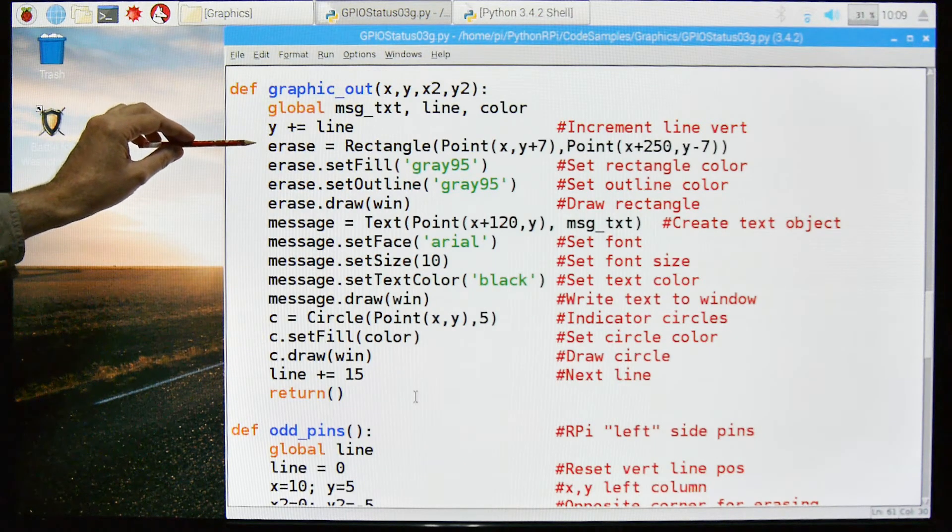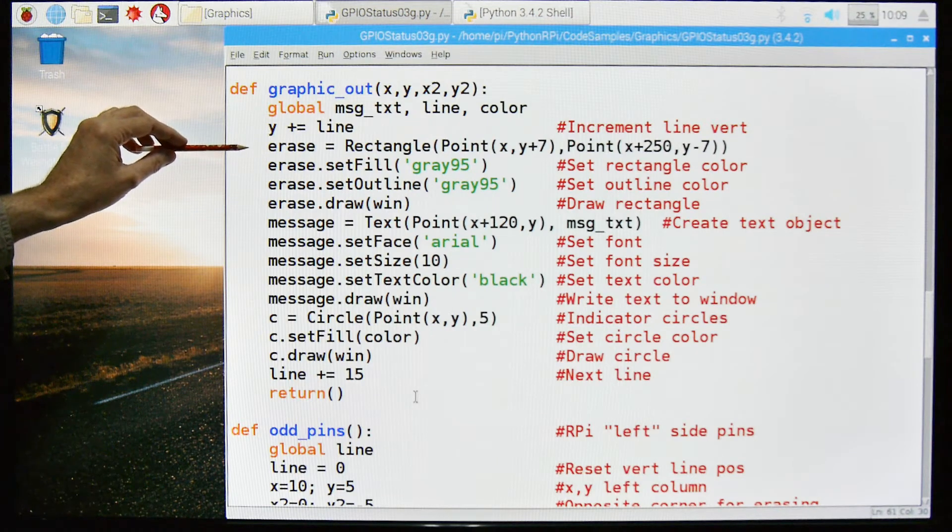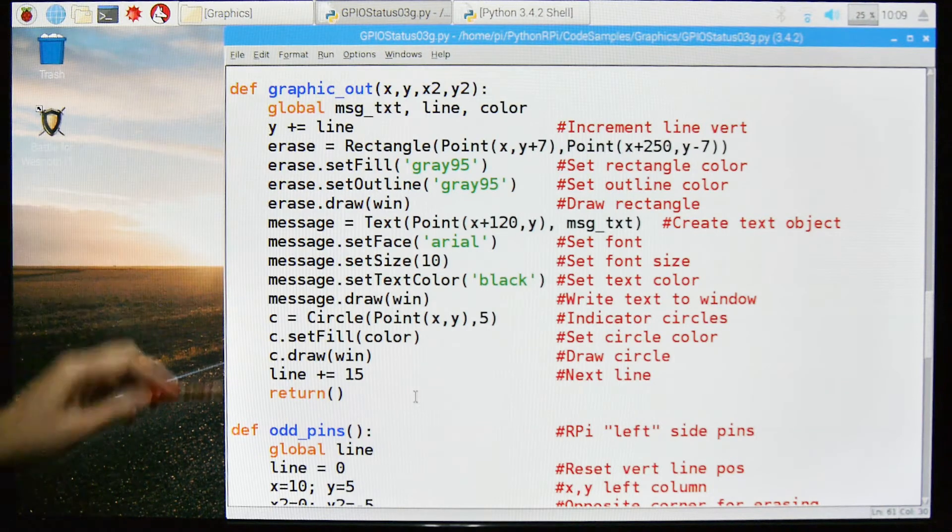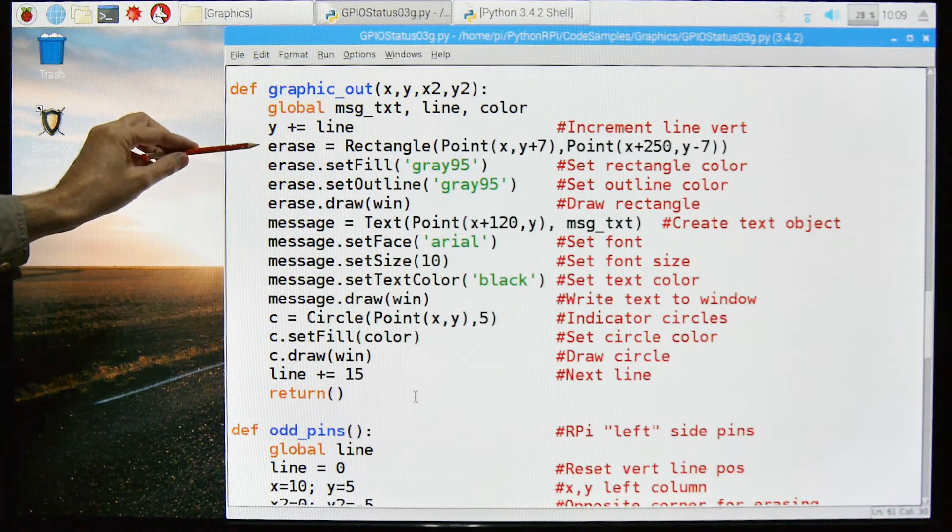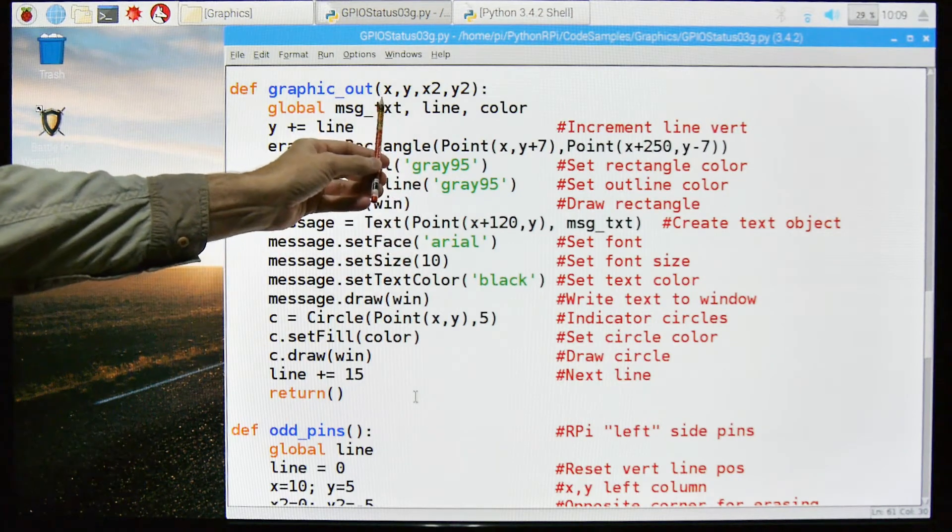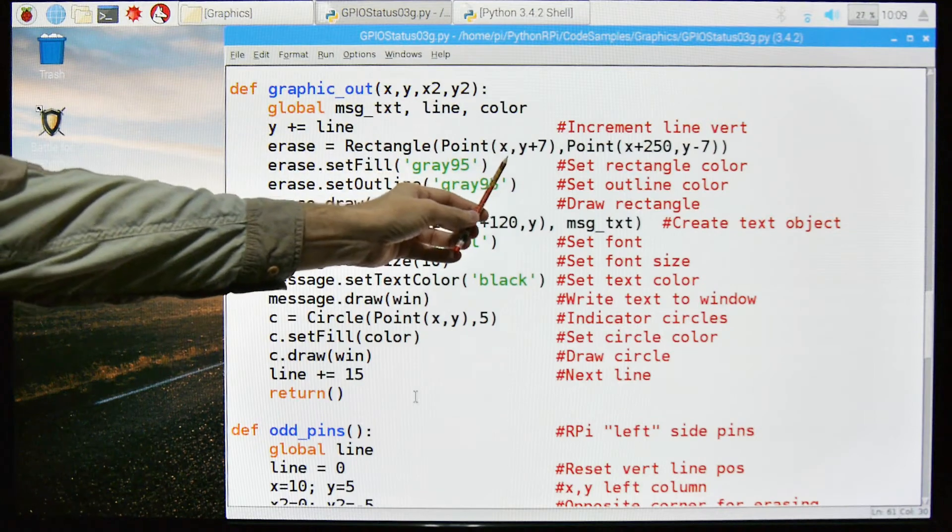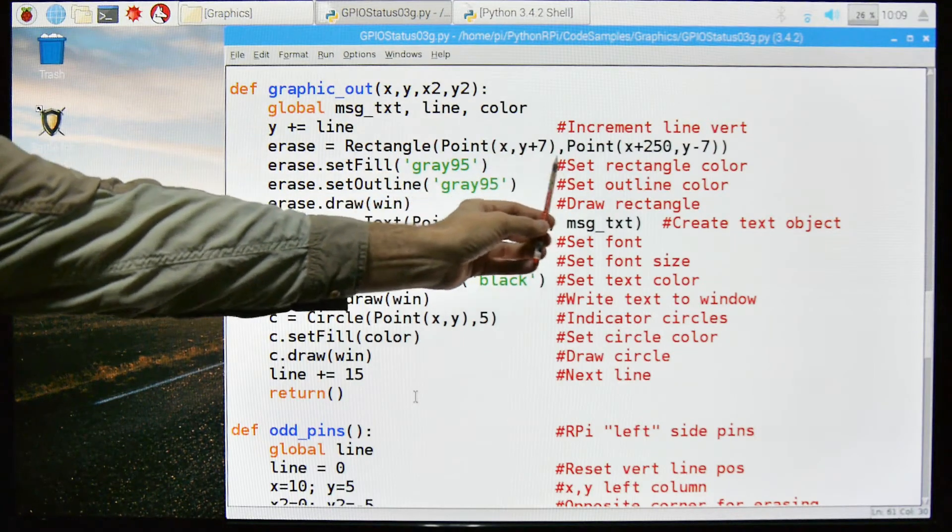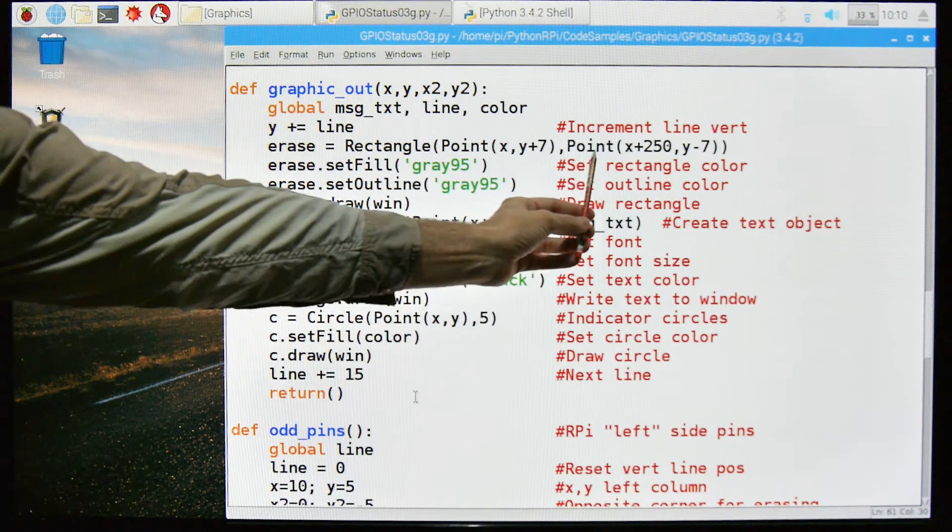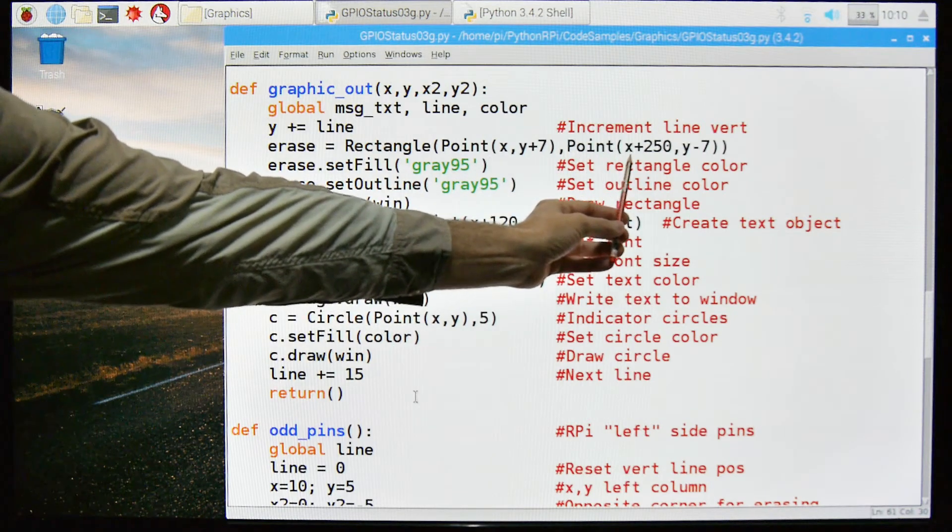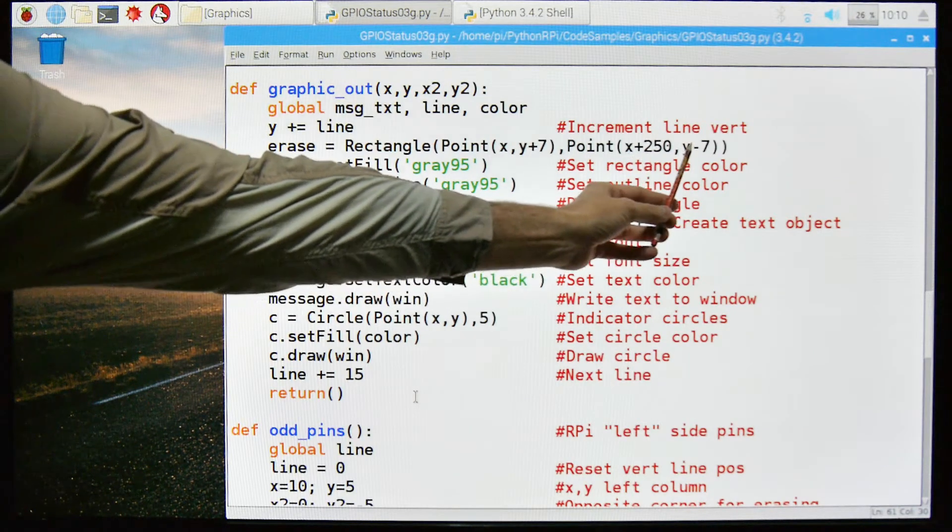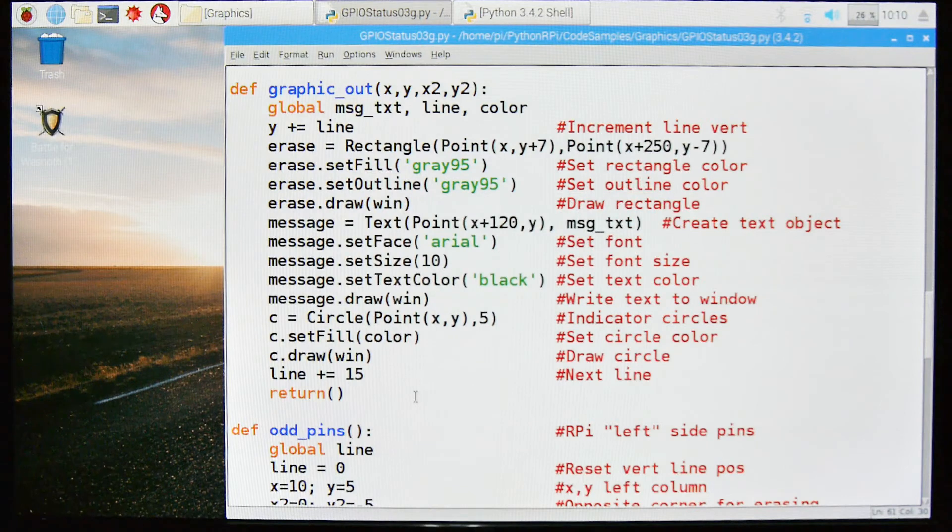So the first thing we're going to do is we're going to erase a position in our window to write to. So it sounds kind of backwards, but we're going to make sure that the space that we're writing to is empty, it's blank. So we're going to create an object called erase. It's going to be a rectangle. It's going to be based on these coordinates that we are passed, so X, Y plus seven. The plus seven is where the dot is going to be. It's shifted seven pixels. The point is the upper right corner of the box is going to be at this, offset by 250, and Y offset by minus seven.